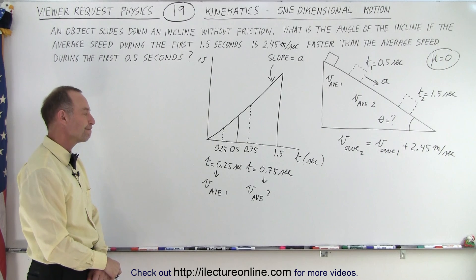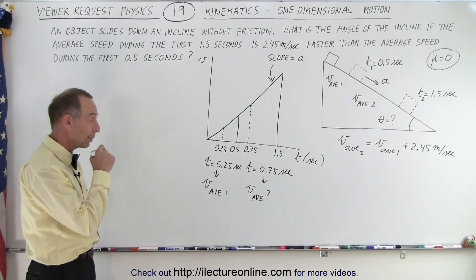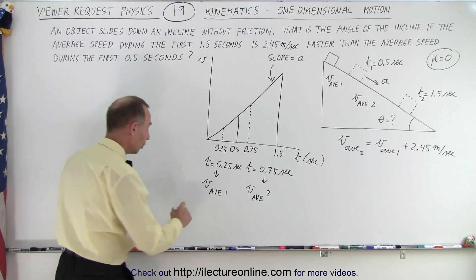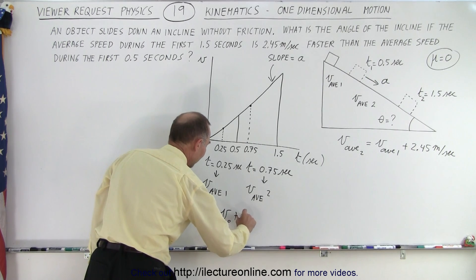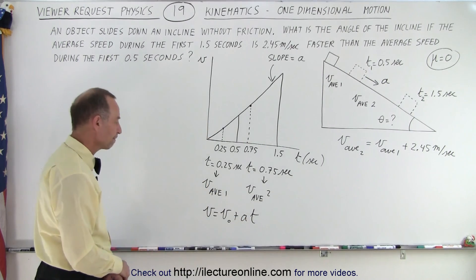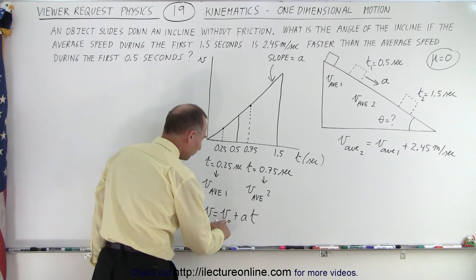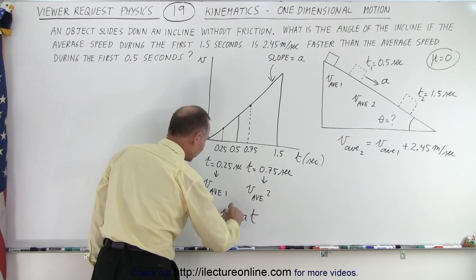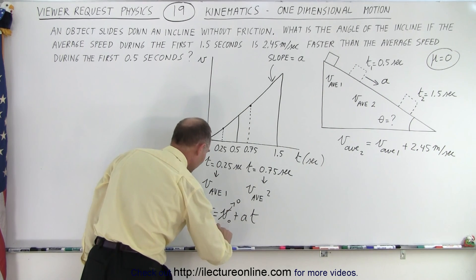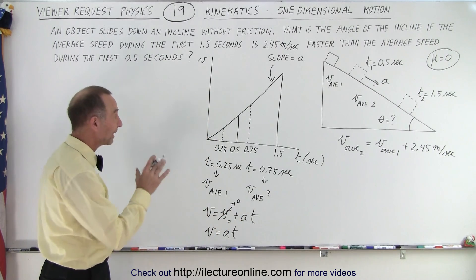So how do we calculate V average 1 and V average 2? Well, what we can say here is that we could use the equation kinematics where V is equal to V initial plus acceleration times time. V initial is going to be 0 because we start right here. So we know V initial is equal to 0. So we could write that V is equal to acceleration times time. So we could do that for both cases.